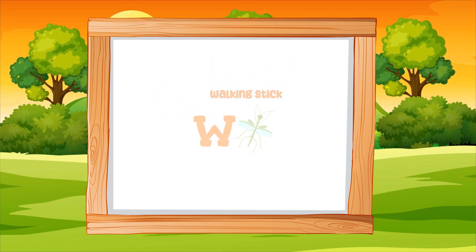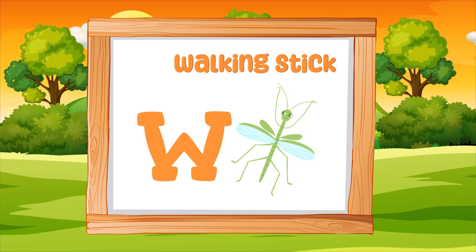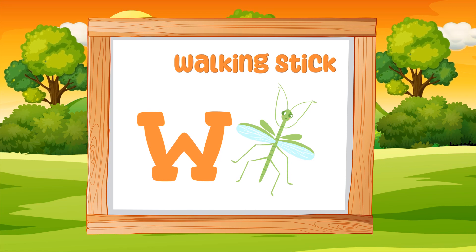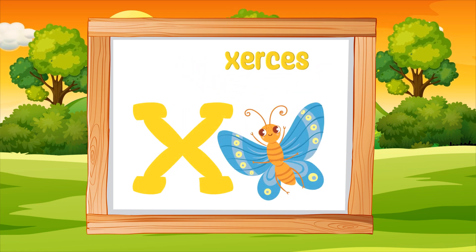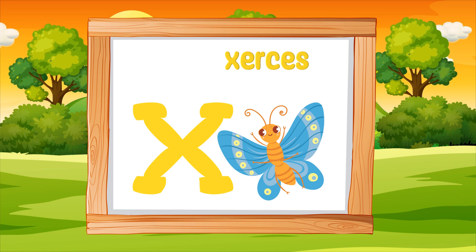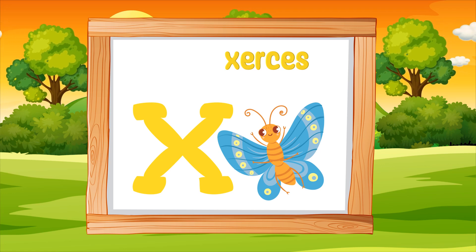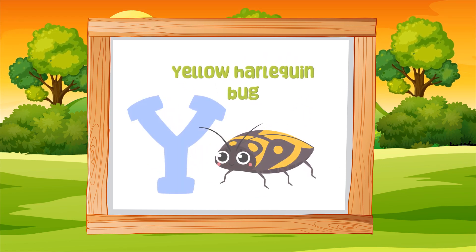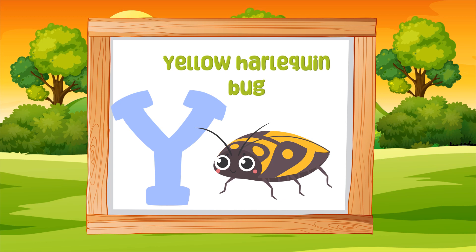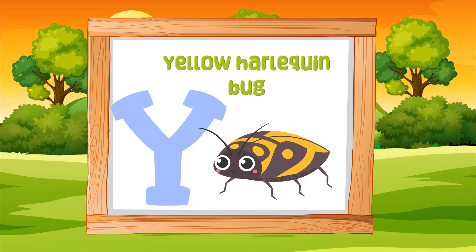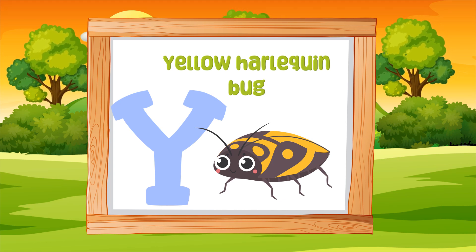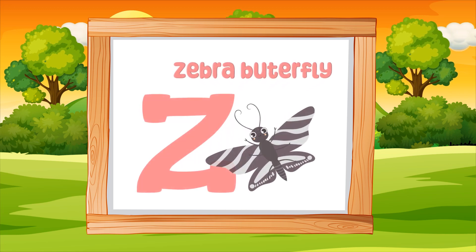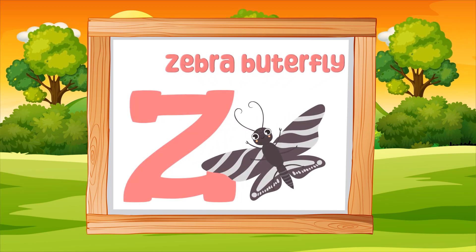V for Velvet Ant. W for Walking Stick. X for Xerxes. Y for Yellow Harlequin Bark. Z for Zebra Butterfly.